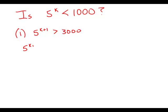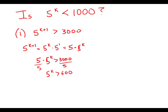We know that 5 to the k plus 1, by the laws of exponents, that's 5 to the k times 5 to the 1, so that's 5 times 5 to the k. So we know that 5 times 5 to the k is greater than 3,000. So if we divide both sides by 5, what we get is that 5 to the k is greater than 600.